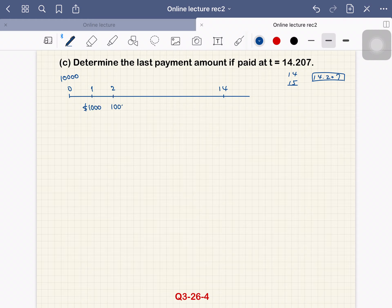Repayment amount is $1,000 for year 1 to year 14. Then lastly, we have time point 14.207, and we want to repay the amount Z.